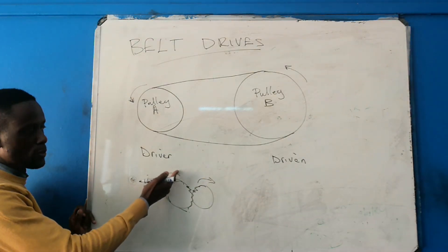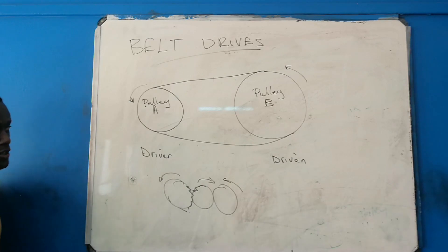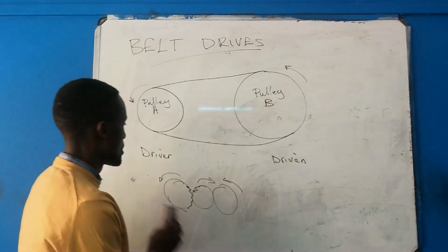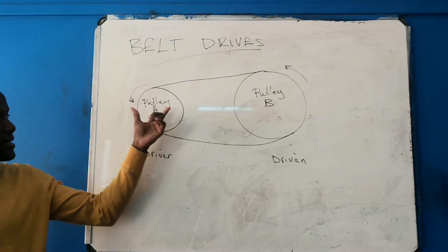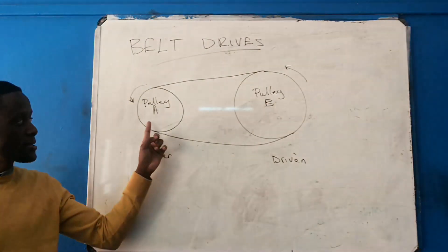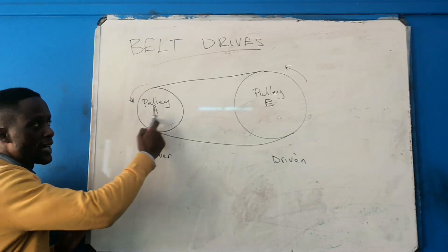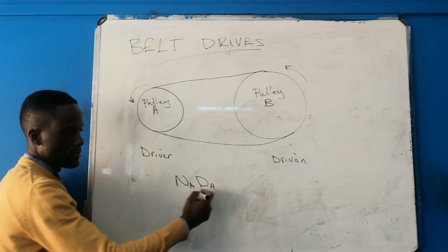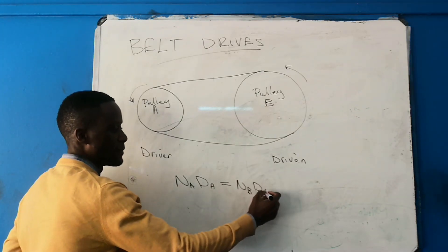With gear drives, if we need to maintain the same direction, we need another gear on the other side. But with belt drives, we are able to maintain the same rotation. There are no teeth on either pulley — what we use to relate them is: the rotational frequency of A times the diameter of A equals the rotational frequency of B times the diameter of B.